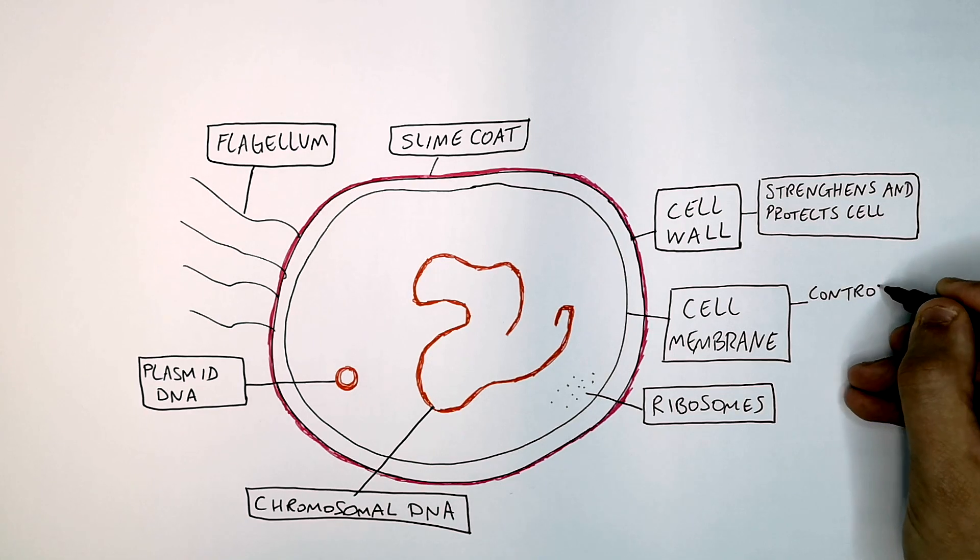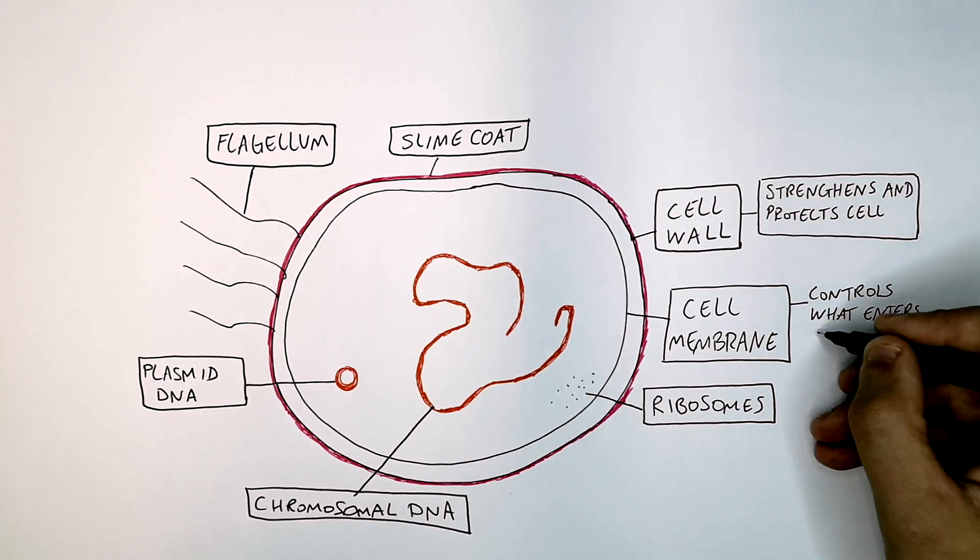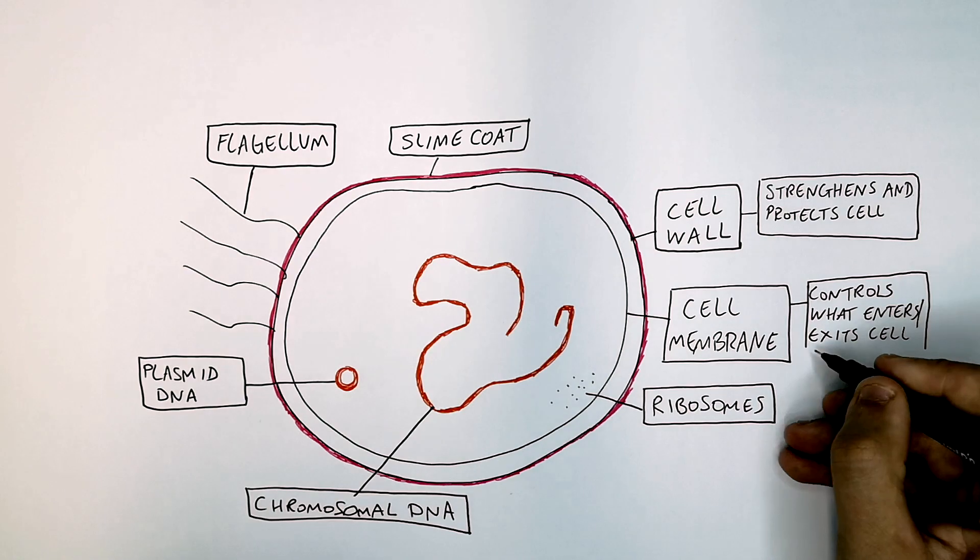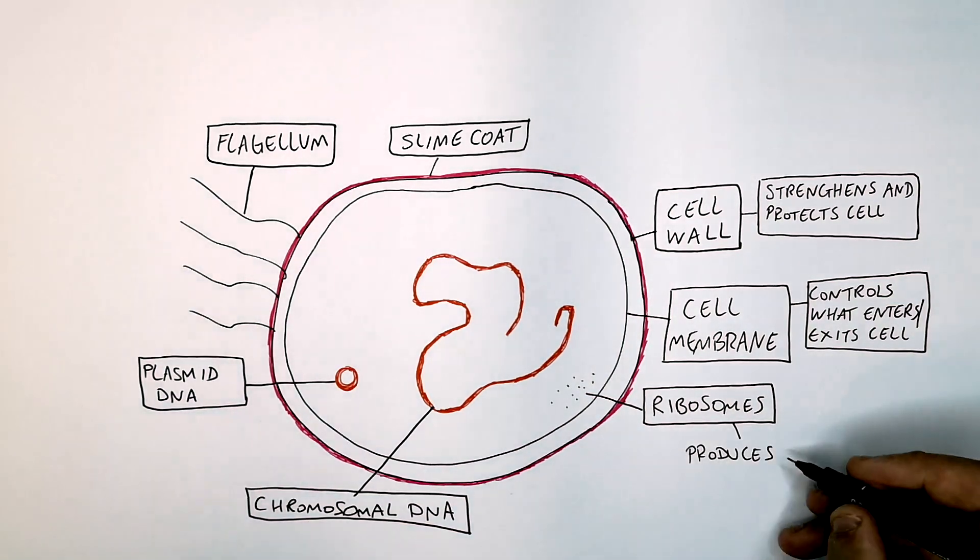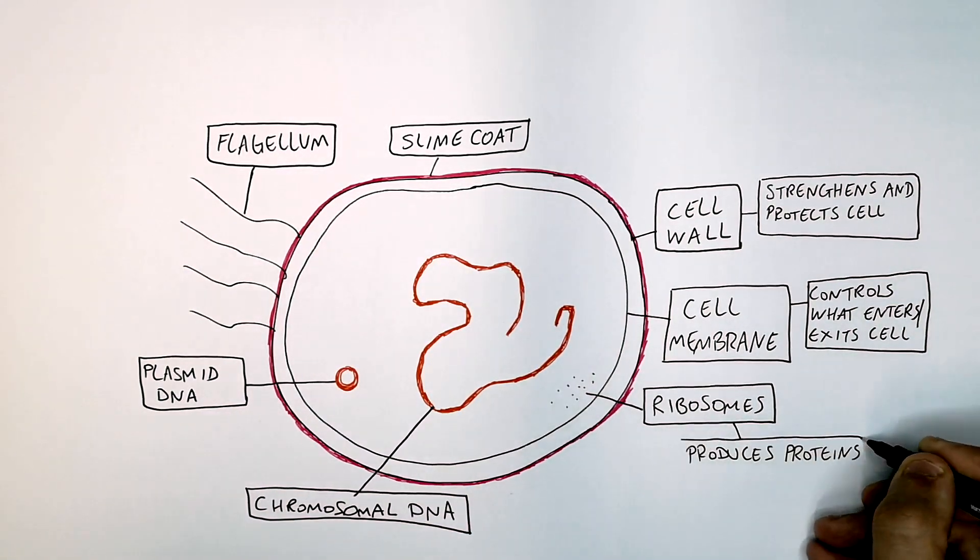The cell membrane controls what exits and enters the cell. The ribosomes produce the proteins for the cell.